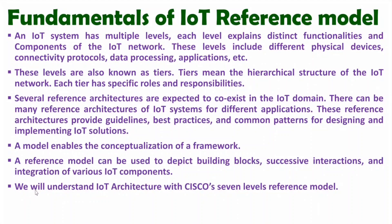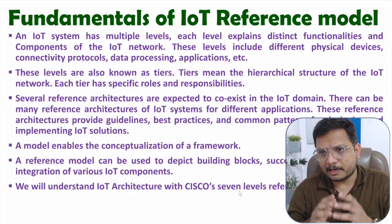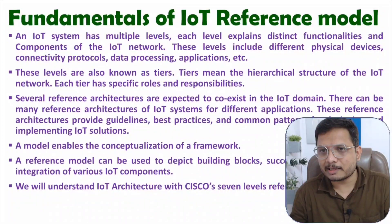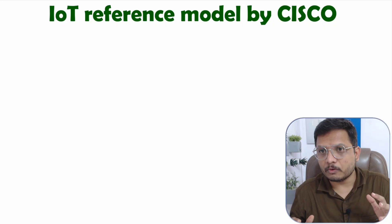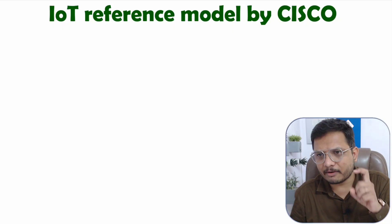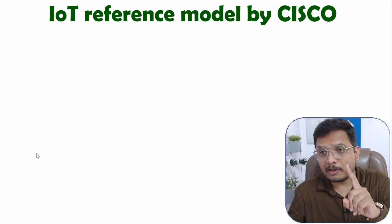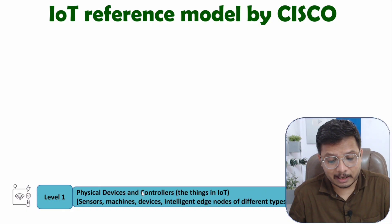In this video we'll be understanding IoT architecture with Cisco. In Cisco's IoT reference model there are seven levels, and I'll explain each level in great detail. Level one includes physical devices and controllers, which are also referred to as 'things' in IoT.